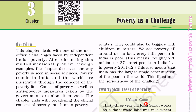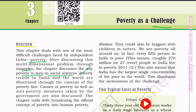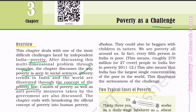This chapter deals with one of the most difficult challenges faced by independent India, i.e. poverty. After discussing this multi-dimensional problem through examples, the chapter discusses the way poverty is seen in social sciences. Poverty trends in India and the world are illustrated through the concept of the poverty line. Causes of poverty as well as anti-poverty measures taken by the government are also discussed. The chapter ends with broadening the official concept of poverty into human poverty.